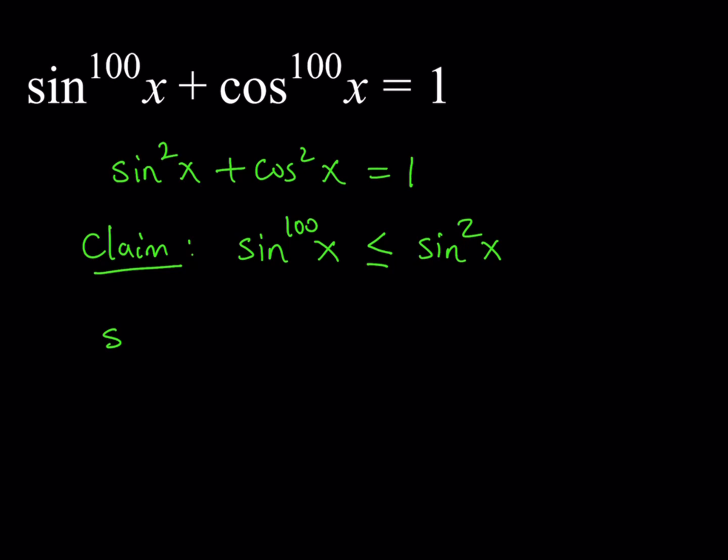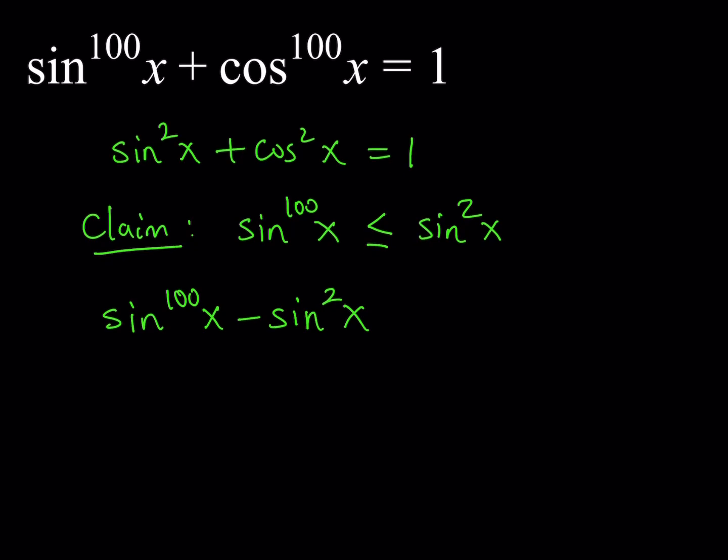Because if you can prove that this difference is negative or non-positive, then you can basically say that one of them is less than or equal to the other one. So here's what I'm going to look at: sine x to the power 100 minus sine squared x. And according to my claim, this needs to be less than or equal to zero. Let's see what happens. Obviously, this can be factored. I can take out a sine squared, and this should give me sine x to the power 98 minus 1.